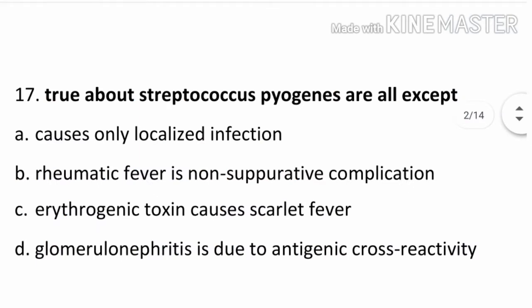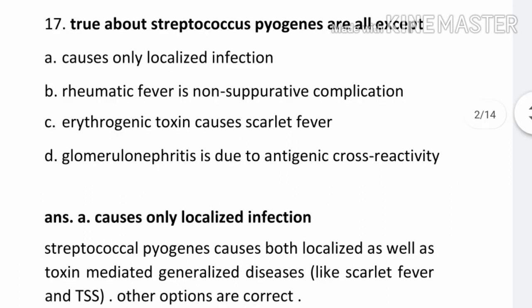Question number 17. True about Streptococcus pyogenes are all except: Option A. Causes only localized infection. Option B. Rheumatic fever is a non-suppurative complication. Option C. Erythrogenic toxin causes scarlet fever. Option D. Glomerulonephritis is due to antigenic cross-reactivity. The correct answer is Option A. Streptococcal pyogenes causes both localized as well as toxin-mediated generalized disease like scarlet fever and TSS. Other options are correct.